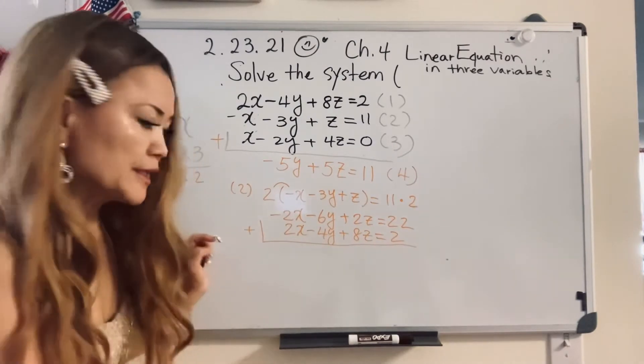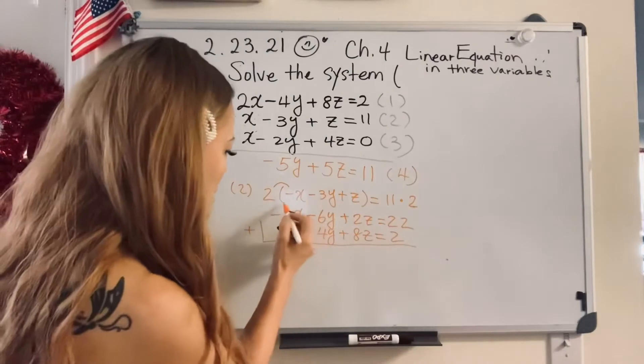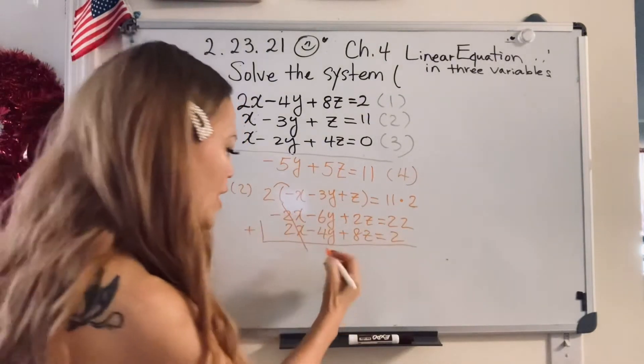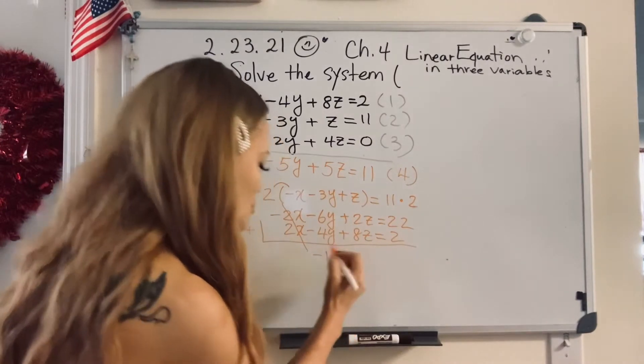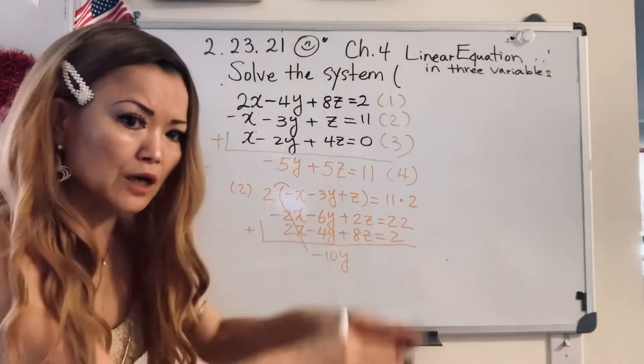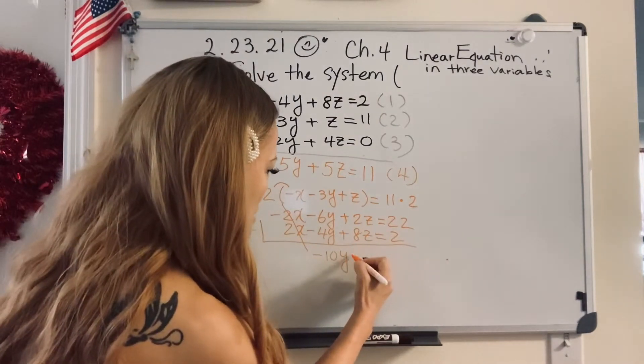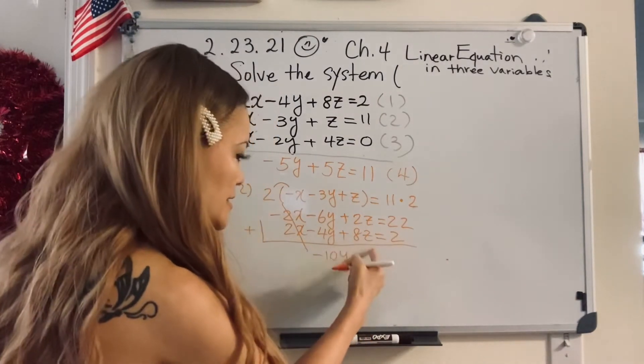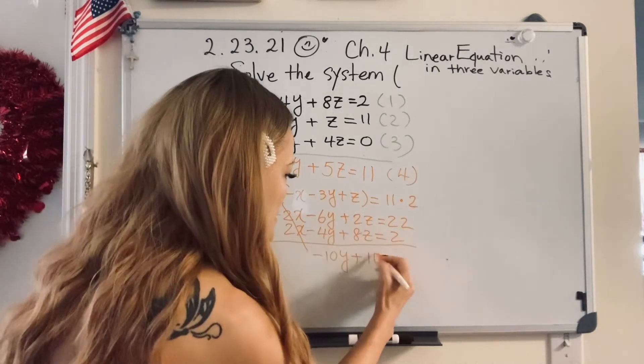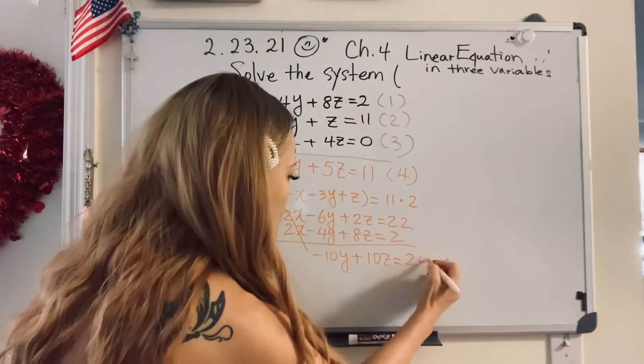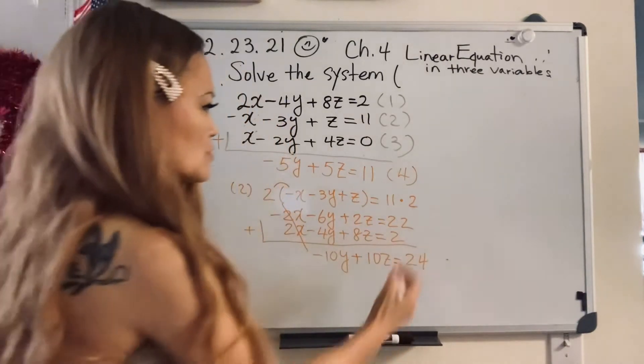Gotta remember that energy, right? So negative six y, negative four y, still negative ten y. You must understand integers, how to add and subtract. Plus eight z, two more z, ten z equal 22 plus two, 24. Ta-da! So I got it done. This is number five.